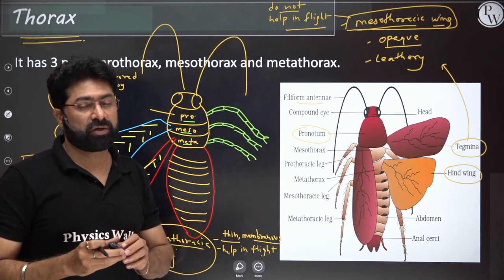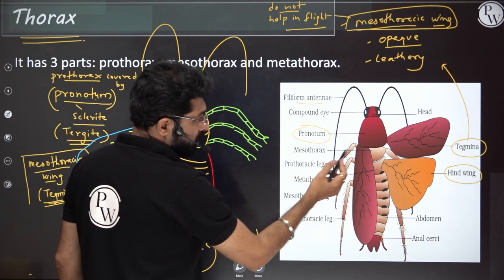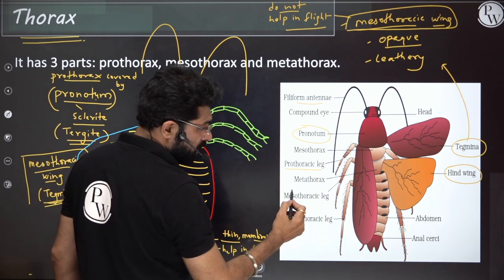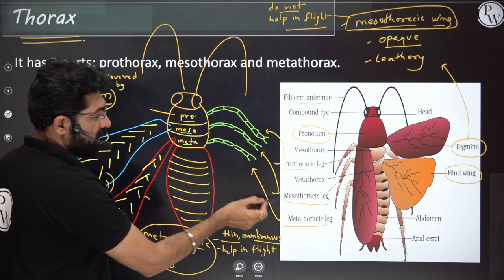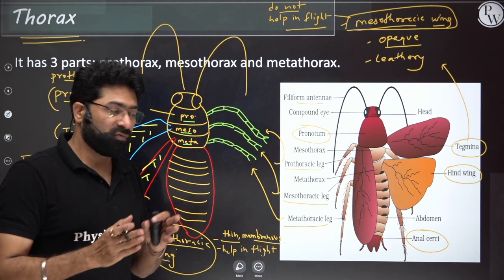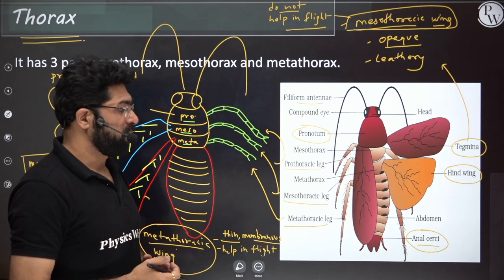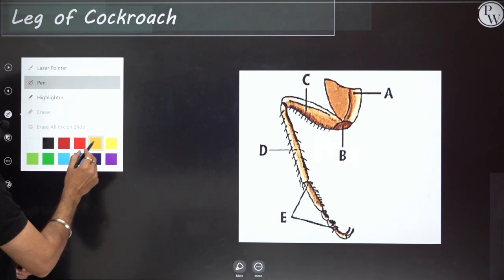From the NCERT diagram: hind wing is thin and membranous and helps in flight; tegmina is the mesothoracic wing which is opaque and leathery. Each thoracic region gives rise to a leg — prothoracic, mesothoracic and metathoracic legs. Anal cerci are present on the 10th tergum in both male and female — they are sensitive to vibrations and sound.